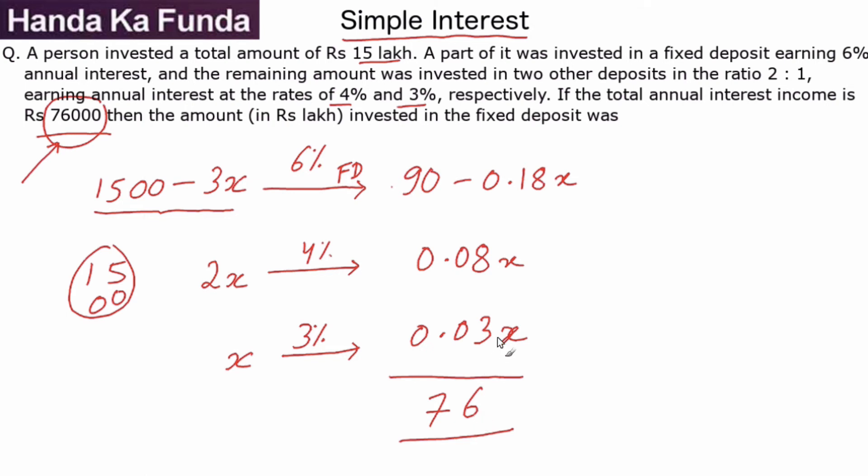Now we can calculate the total should be 76. Let me add it all up. This is 90, 0.18x, 0.08x, 0.03x. 0.08 and 0.03 will become 0.11x. 0.18x minus 0.11x, 18 minus 11 is 7, so this is 0.07x.